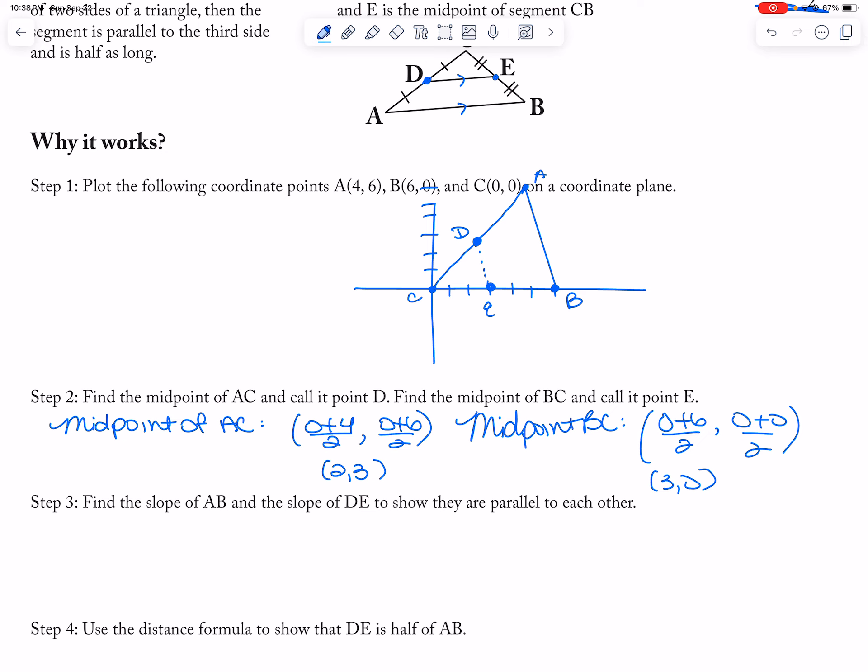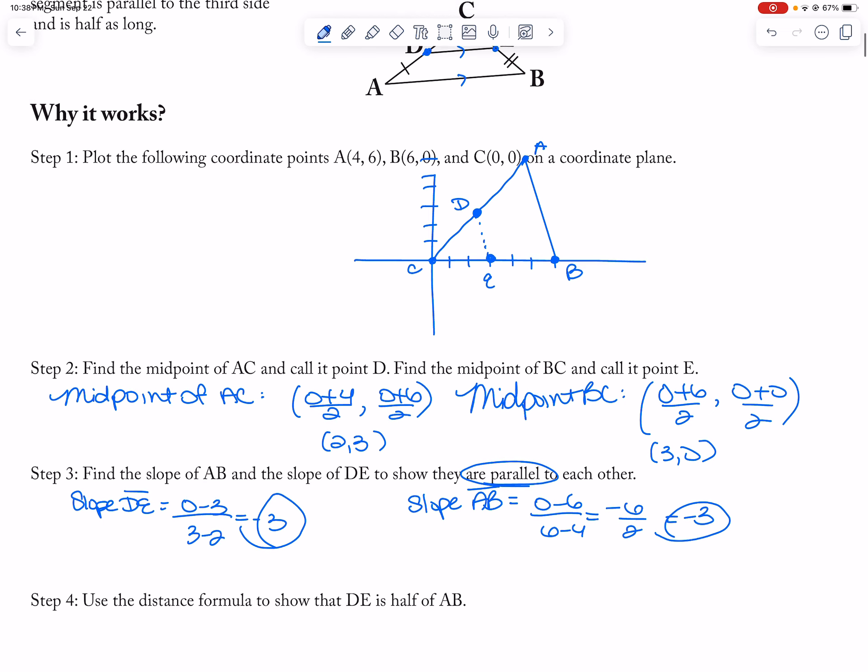Okay, so first we're going to find slope. So slope of DE is 0 minus 3 over 3 minus 2, which is negative 3. And then the slope of AB is 0 minus 6 over 6 minus 4, which is negative 6 over 2, which is negative 3. So because the slopes are the same, they show that the two lines are parallel to each other.